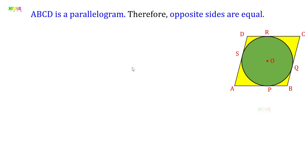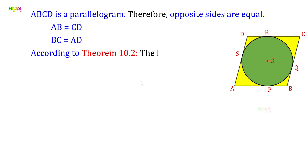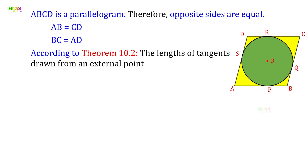Now we use Theorem 10.2: the lengths of tangents drawn from an external point to a circle are equal. From vertex A, the tangents are AS and AP, so AP = AS. From vertex B, BP = BQ. From vertex C, CR = CQ. From vertex D, DR = DS.